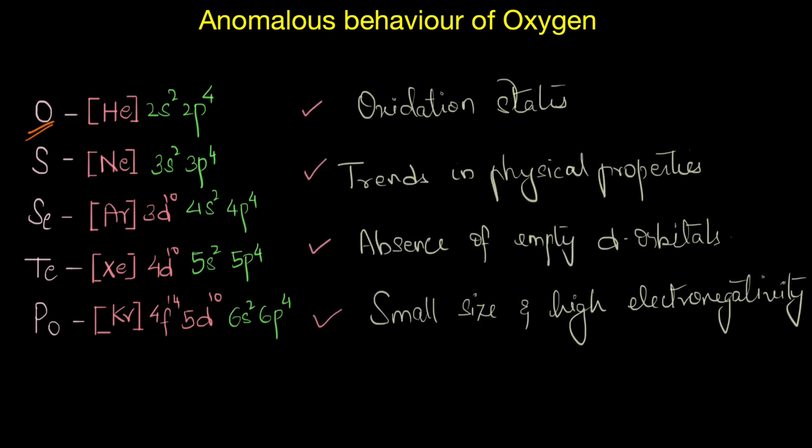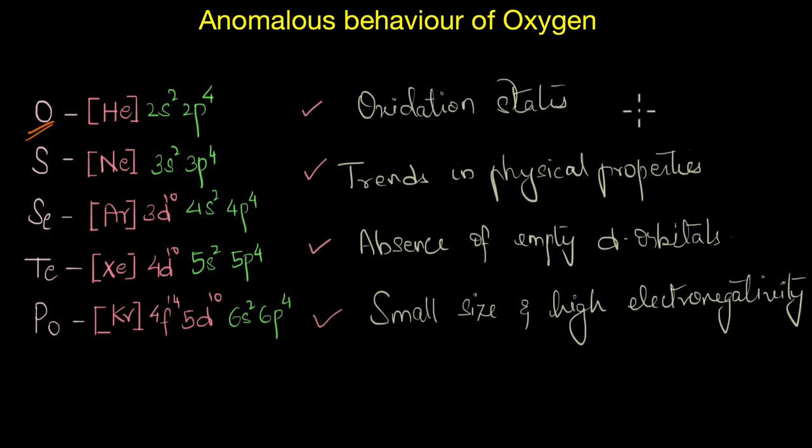In this video, we will look at a few things. We will look at the multiple oxidation states exhibited by oxygen. Secondly, we will look at the physical properties of oxygen and compare them with that of sulfur. Thirdly, we will see how the absence of d-orbitals affects the chemistry of oxygen. And lastly and more importantly, we look at a unique property that oxygen has due to its small size and very high electronegativity.